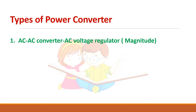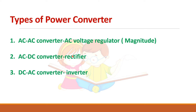The first type is the AC-AC converter, also called an AC voltage regulator, where the magnitude of the AC signal is changed. This is mainly used in fan regulators. The second type is the AC-DC converter, also called a rectifier, which is used for charging batteries.